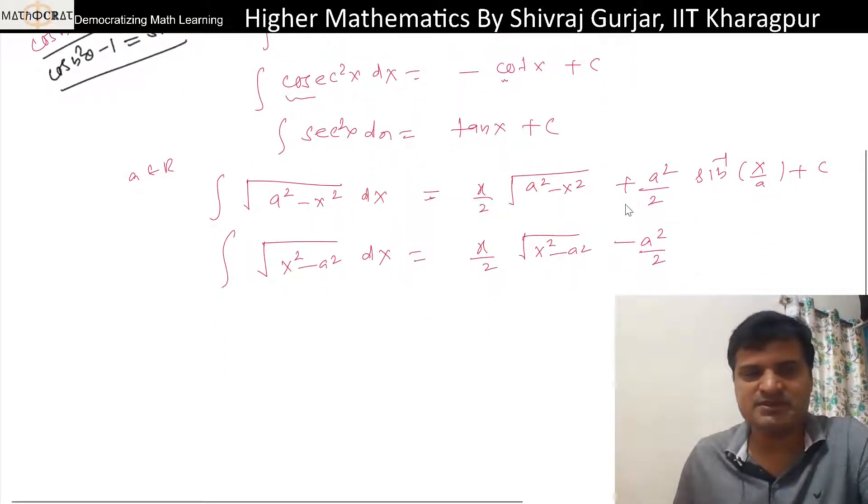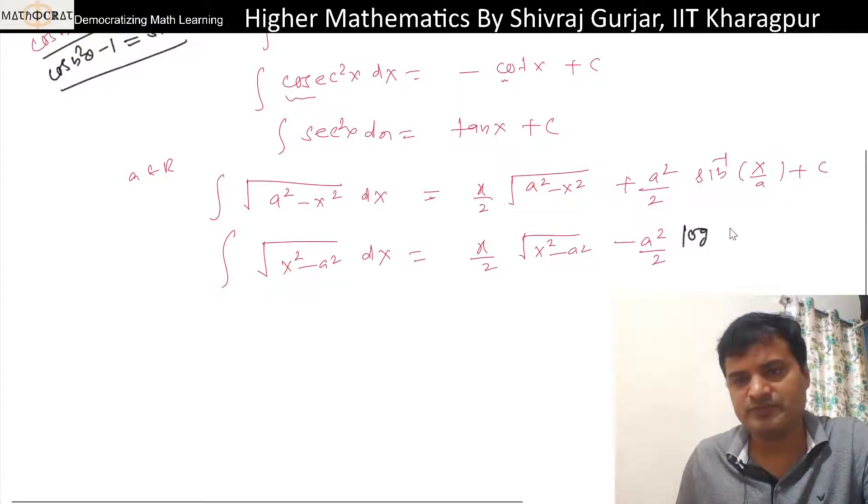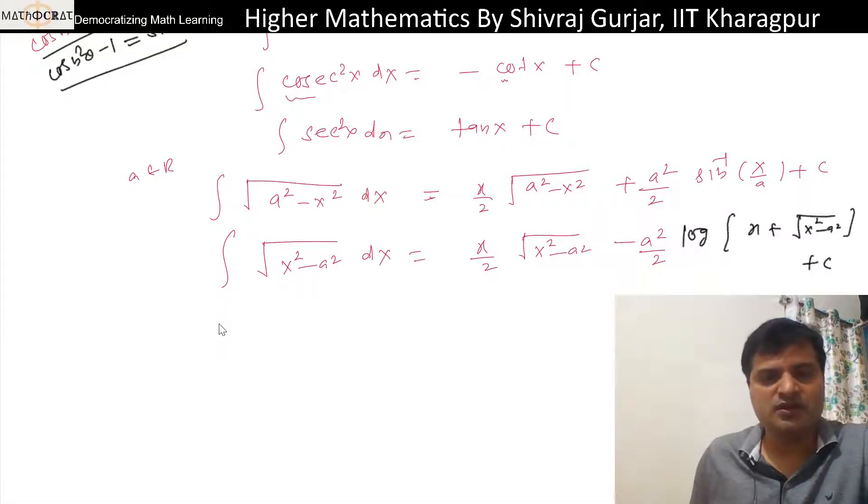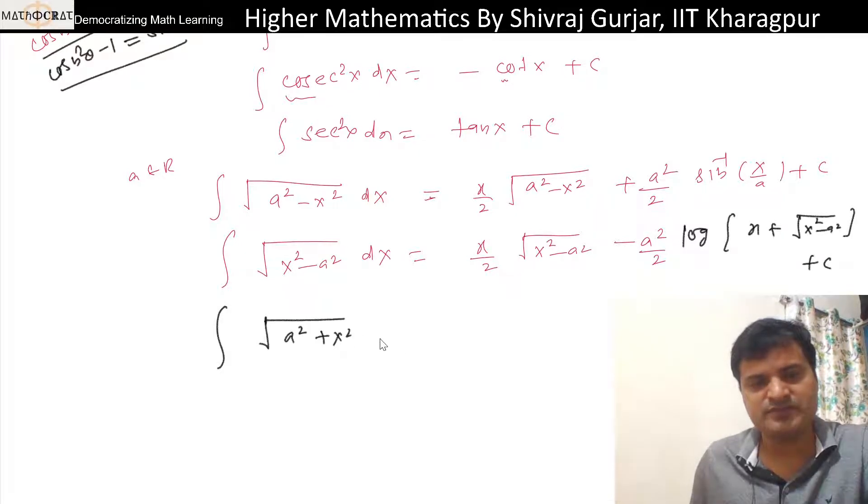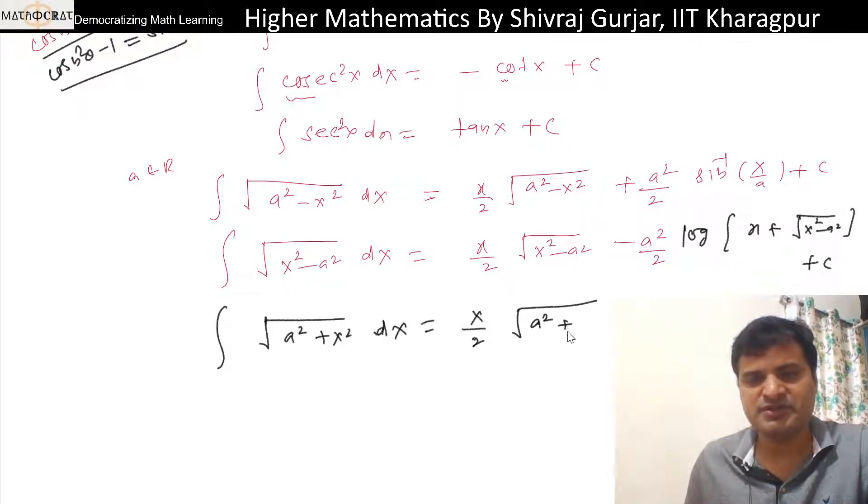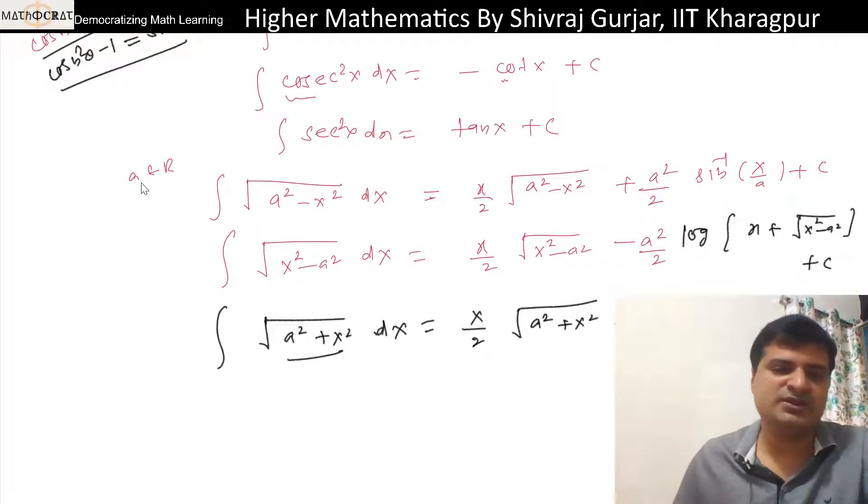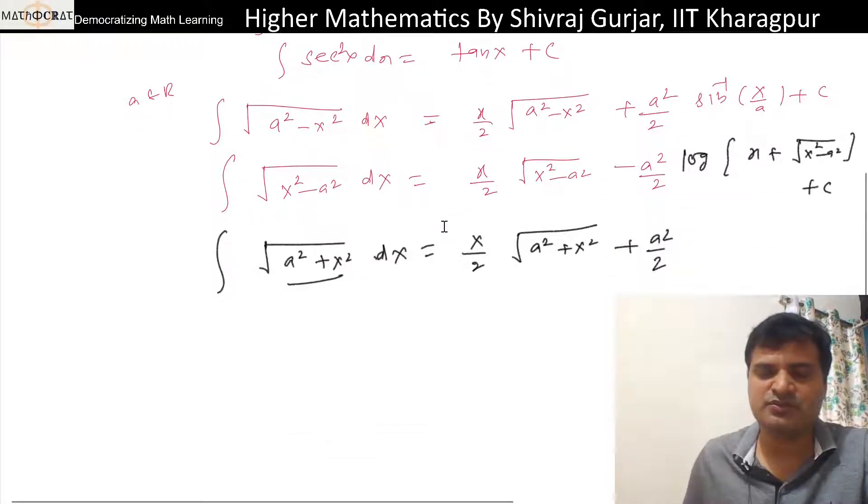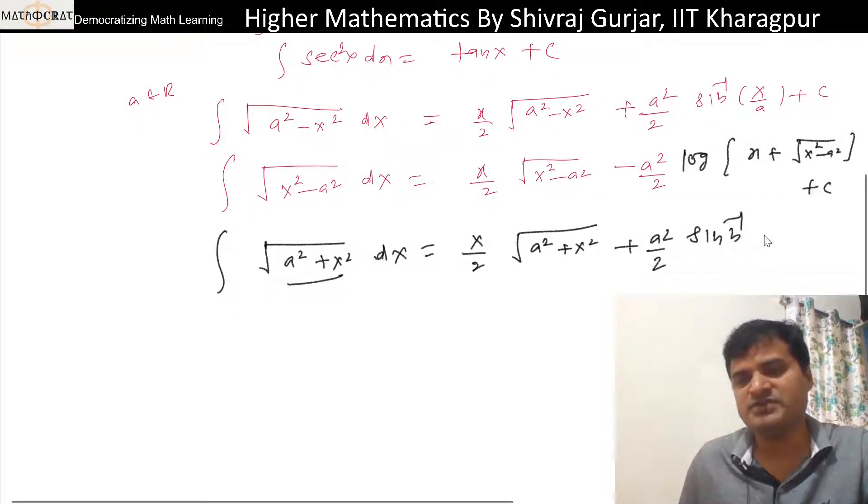We can write this as log x plus root x square minus a square plus some constant of integration. Or in this case, it may be plus. For a square plus x square dx, you get x by two root a square plus x square plus a square by two log a square plus x square. Putting x equals a sinh theta, this will be sinh inverse x by a.